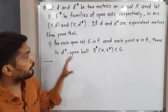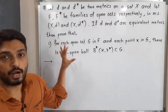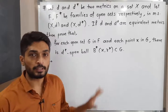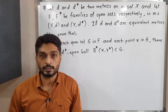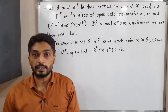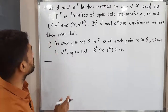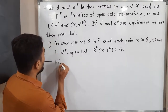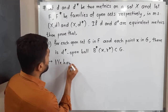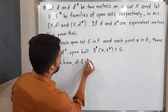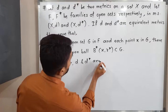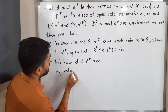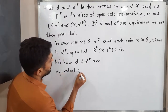And what we have to prove? We have to prove two things. So I have written one here. So let us prove the first part, and after that we will go for the second part. Let us start with the given information. So D and D star are equivalent metrics.